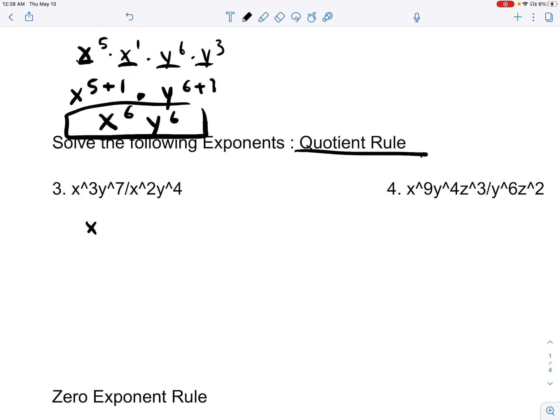You have quotient rule. So, x cubed y to the 7th over x squared y to the 4th. Since these have the same bases, we can write this as x cubed divided by x squared times y7 divided by y4. x cubed divided by x squared is just x. y7 divided by y4 is y cubed. And that will be your final answer.